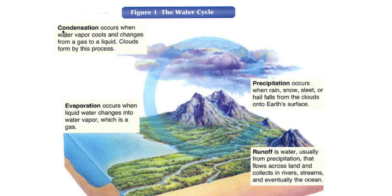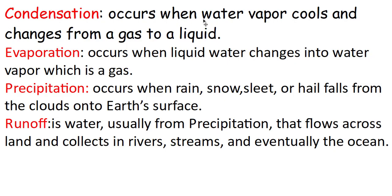Condensation: water vapor, which is in gas form, changes into liquid — we call that condensation. Runoff: when precipitation reaches the surface of the earth, it changes into water that moves from up to down to reach the lake, sea, or stream — that is called runoff. Condensation again: water vapor cools and changes from gas to liquid.